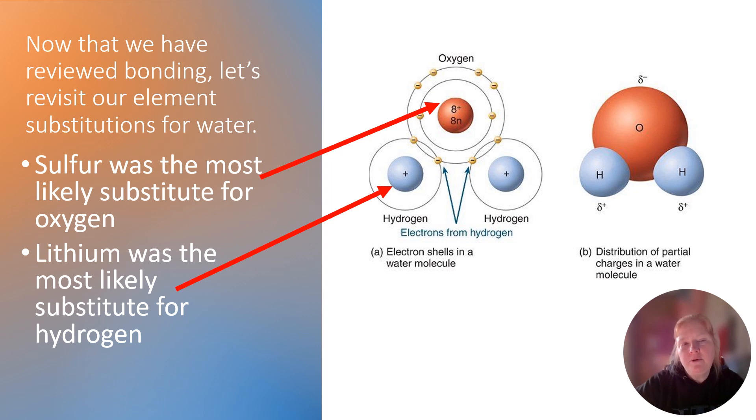So now that we reviewed bonding, let's revisit our element substitutions for water. So sulfur was the most likely substitute for oxygen. So here's oxygen in water. And what we're going to do is take out oxygen and put sulfur in its place. And then in another substitution, lithium was the most likely for hydrogen, right? So in that one, we're going to take out hydrogen and put lithium in its place. So let's kind of go through that so you can see what I mean.